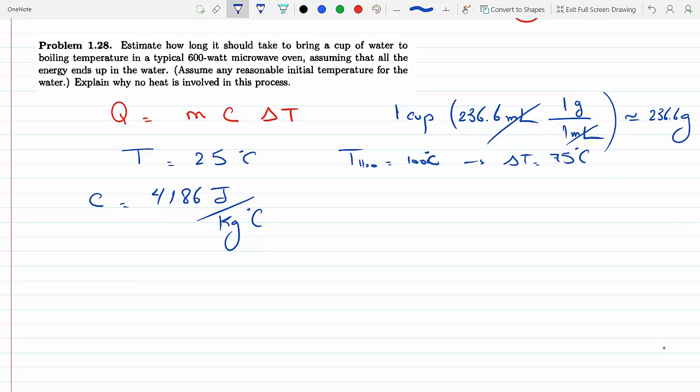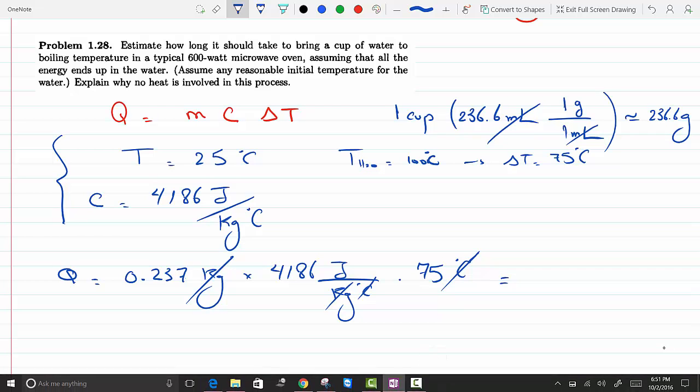And now plugging all this stuff into Q, so then I get Q to equal—I'm gonna change that to kilograms so I could divide it by a thousand—so let's just say 0.237 kilograms times 4,186 joules per kilogram Celsius, and the change in temperature is 75 degrees Celsius. You can see how the units work out, and I get the energy required to raise the temperature of water by that amount of degrees as, plugging this into the calculator...